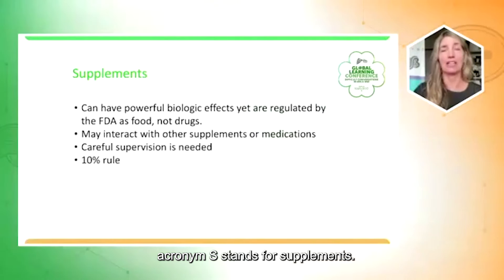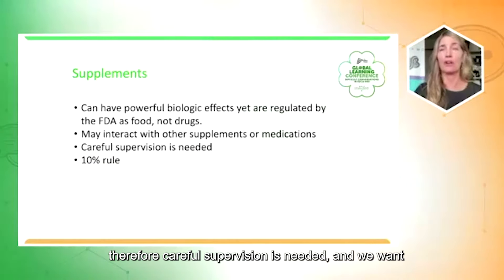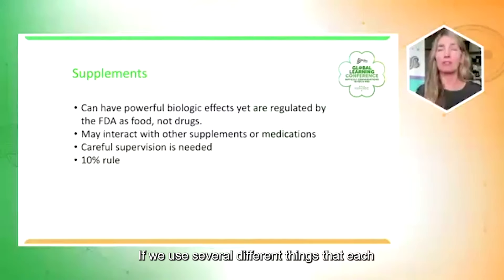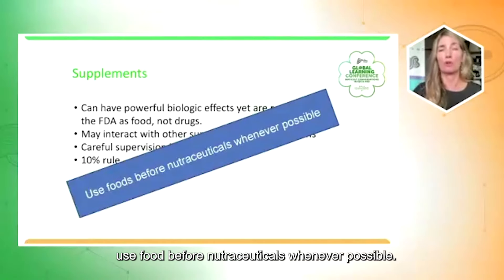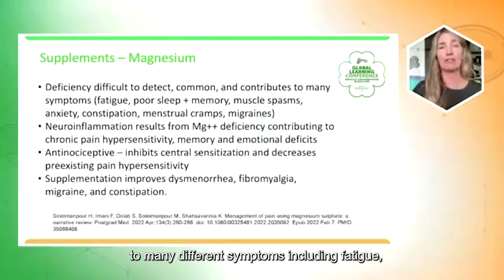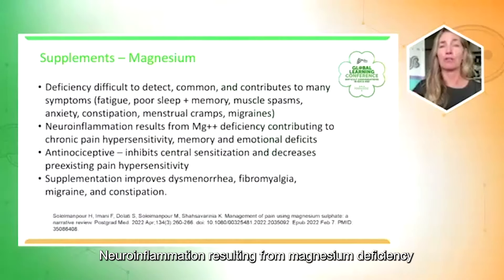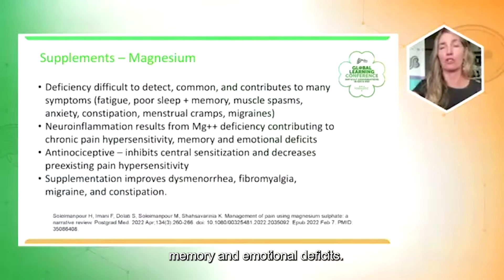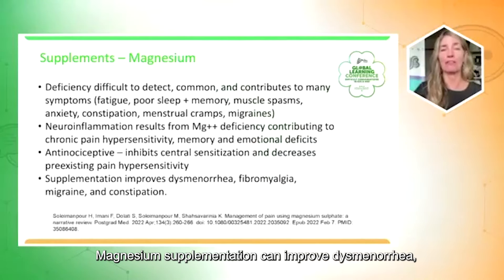The last letter of the acronym, S, stands for supplements. Supplements have powerful biologic effects yet are regulated by the FDA as food, not drugs. They can interact with other supplements or medications, so careful supervision is needed. We want to think about the 10% rule — if several different things each contribute 10% improvement, eventually we reach meaningful results. Use food before nutraceuticals whenever possible. One supplement to highlight in particular is magnesium, a co-activator of hundreds of enzymes. Magnesium deficiency is difficult to detect but quite common, contributing to fatigue, poor sleep, poor memory, muscle spasms, anxiety, constipation, menstrual cramps, and migraine. Neuroinflammation from magnesium deficiency contributes to chronic pain, hypersensitivity, memory, and emotional deficits. Magnesium is anti-nociceptive, inhibits central sensitization, decreases pre-existing pain hypersensitivity, and supplementation can improve dysmenorrhea, fibromyalgia, migraine, and constipation.